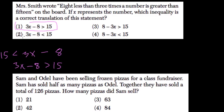In the other choices, 3x minus 8 is less than 15. Here we have it starting with 8 and then subtracting 3, but that would be 3 times the number less than 8 — so those two are out.